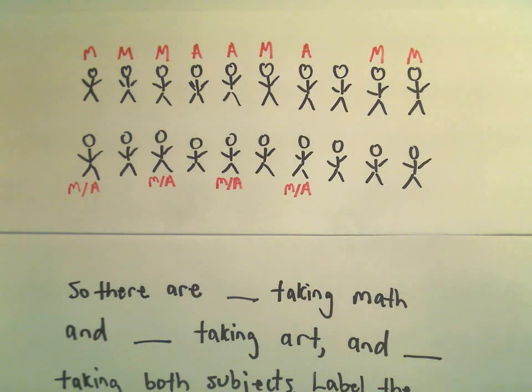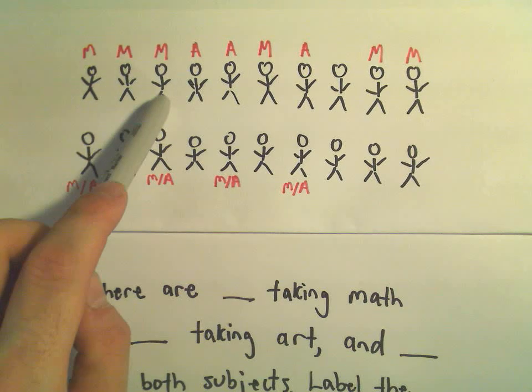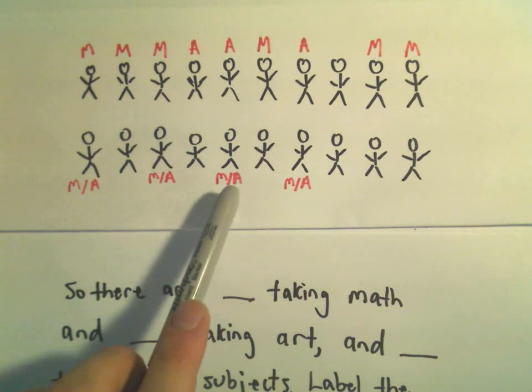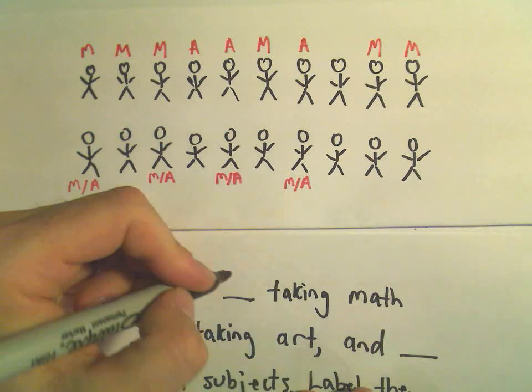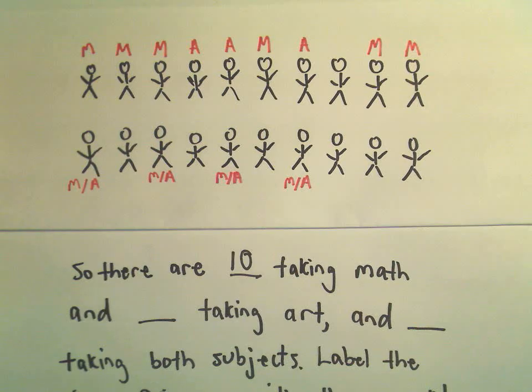Let's count the number of people that are taking math. So it looks like we've got one, two, three, four, five, six, seven, eight, nine, ten. It looks like there are ten people that are taking math, if we went through here and just asked everybody and counted.